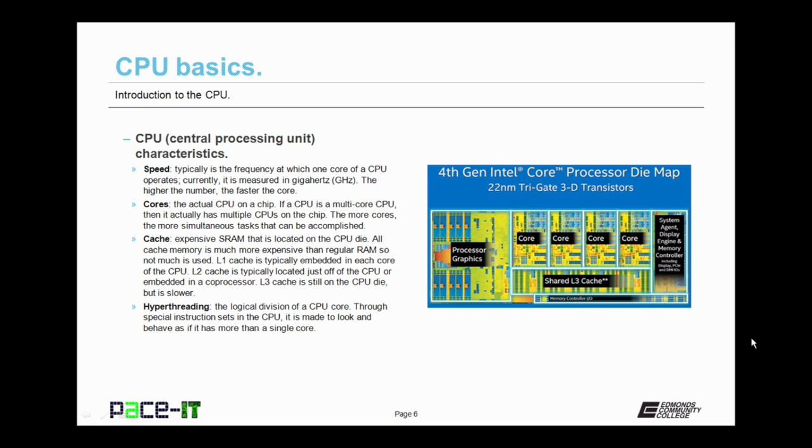Now let's talk about the cores. The cores are the actual CPU on a chip, on a silicon wafer. If a CPU is a multi-core CPU, then it actually has multiple CPUs on the same chip. The more cores, the more simultaneous tasks that can be accomplished.